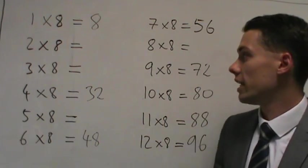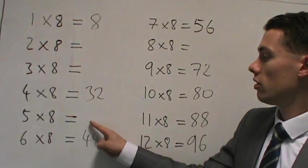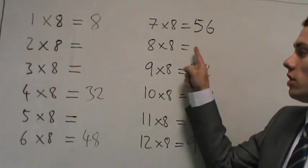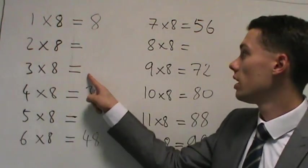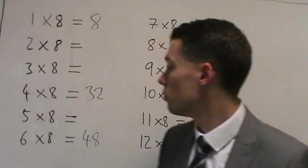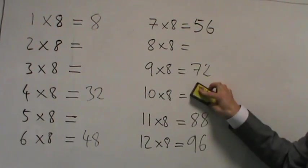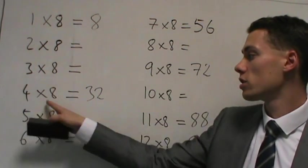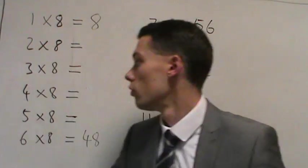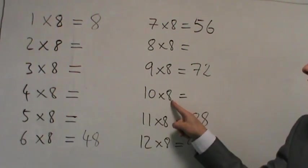So hopefully you've got here that it was 16, 24, 40 and 64. 3 times 8 is 24. And 8 times 8 is 64. I'm going to rub out 2 more now. I'm going to rub out 10 times 8 which is 80. And I'm also going to rub out 4 times 8 which is 32. So 4 times 8 is 32 and 10 times 8 is 80.